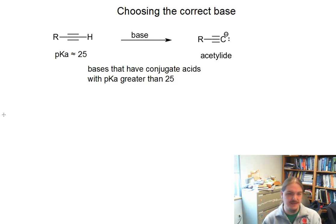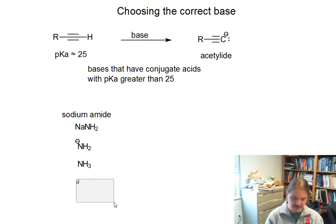A really common base that is used for this purpose is sodium amide. Sodium amide is the compound NaNH2. And the conjugate acid of the NH2 minus anion, the conjugate acid for this is ammonia. And ammonia has a pKa of 38. So ammonia, or amide anion, usually as sodium amide, is a particularly good base for deprotonating terminal alkynes.